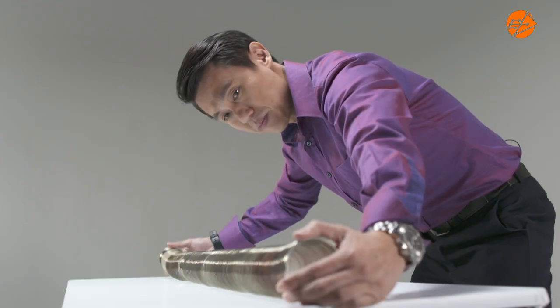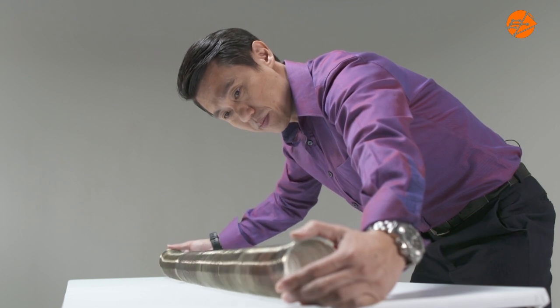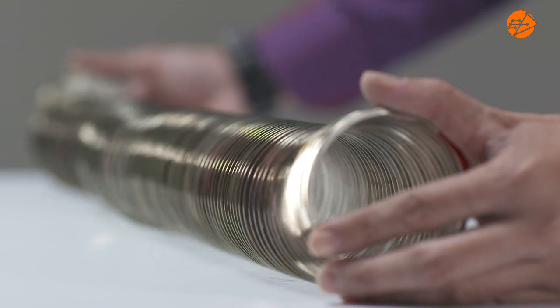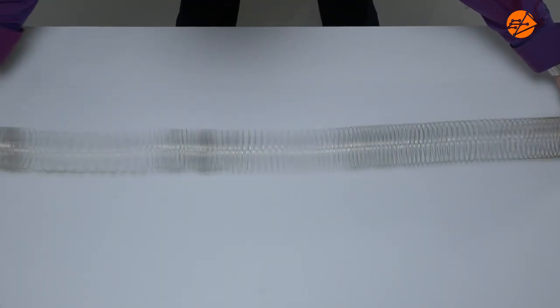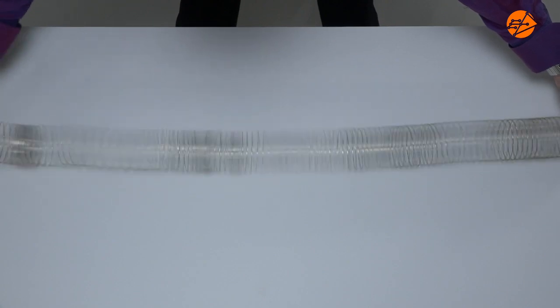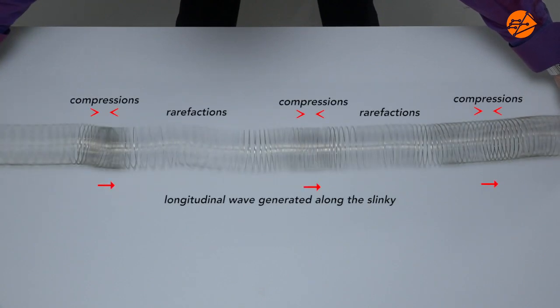Each coil on the slinky represents a layer of air. When the first layer of air is pushed or pulled, it will pass on the energy to the second layer of air, and this sets up a continuous vibration of the layers. A series of compressions and rarefactions is produced, and a longitudinal wave is generated.